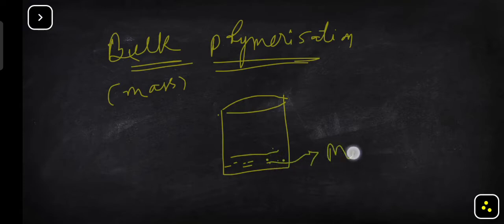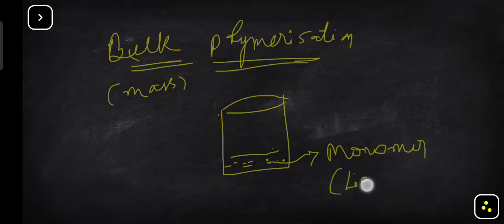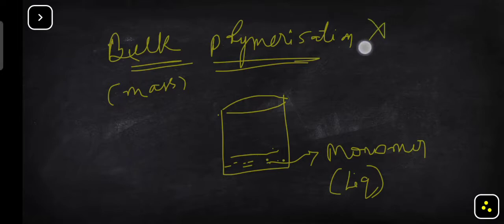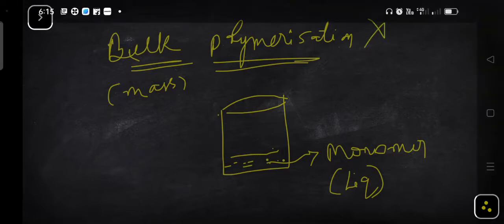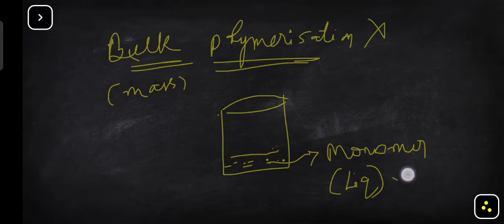In bulk polymerization, you have a monomer inside the beaker and the monomer is in the liquid state. You have to choose a monomer which is in liquid form. If you want to carry out polymerization of a solid monomer, this technique is not useful — only if the monomer is in liquid form. That is also one of the drawbacks of bulk polymerization. Next, you need to add an initiator.